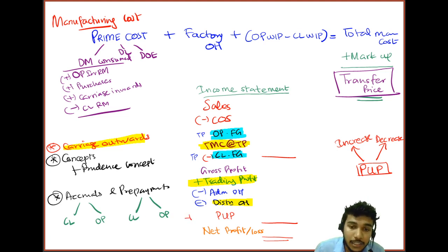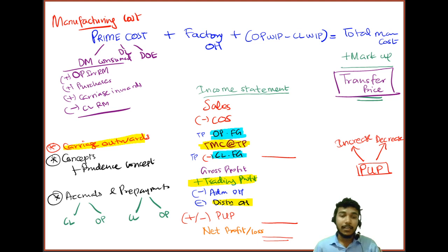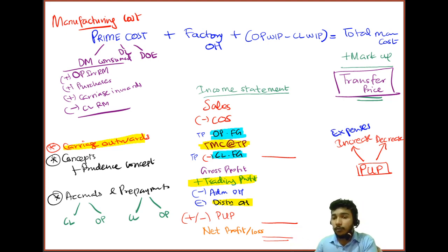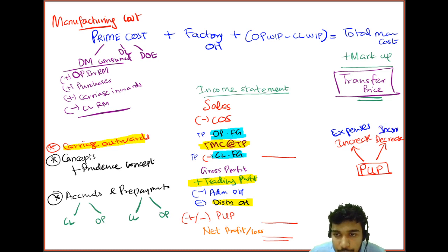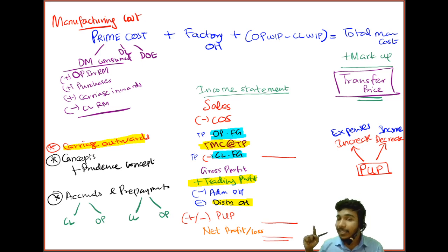To adjust for this, we calculate the provision for unrealized profits. In the income statement, adjust for the increase or decrease in provision for unrealized profits. If inventory levels have increased, the provision for unrealized profits has increased and it is treated as an expense. If closing finished goods levels have dropped, the provision for unrealized profits has dropped and it is treated as an income.